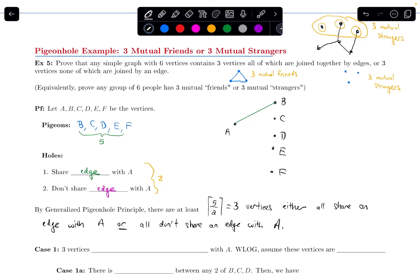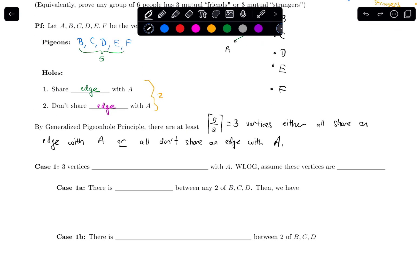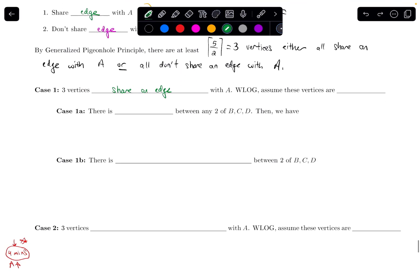Because I have this OR statement, it gives me two cases to consider. Case one is that three vertices share an edge with A. Case two is that there are three vertices that don't share an edge with A. So I'll have to think about each of these cases.